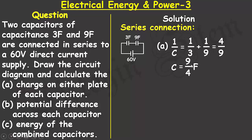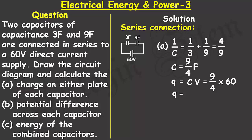The effective capacitance is the reciprocal of 4/9, which gives C = 9/4 farad. To calculate the charge, I use Q = CV — multiplying 9/4 by the potential difference of 60 volts. The charge on either plate of each capacitor is 135 coulombs.